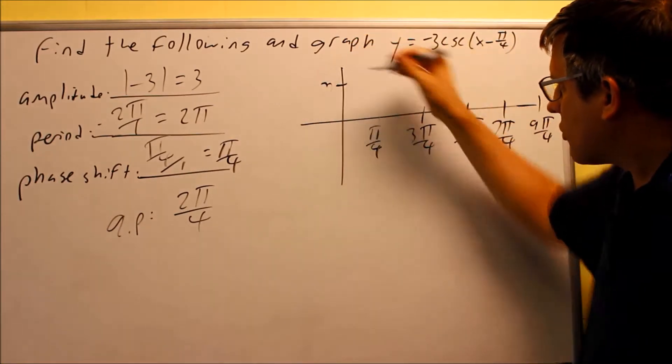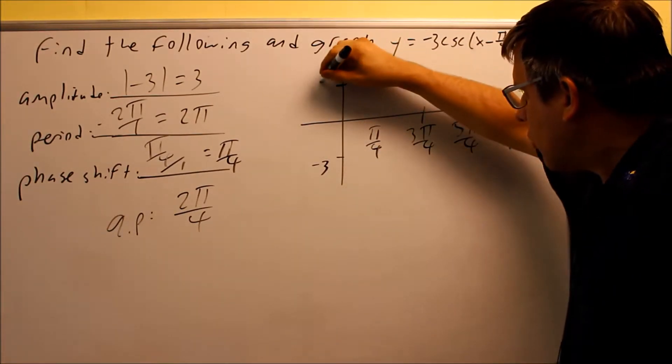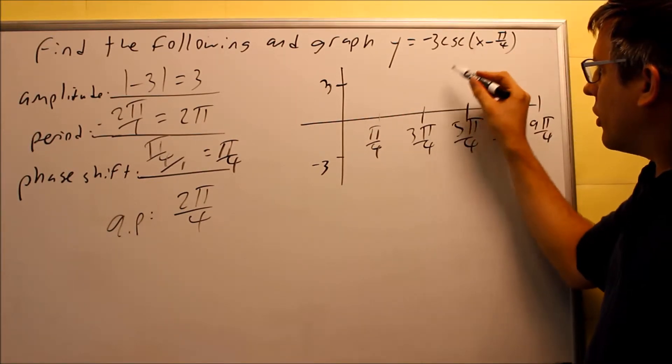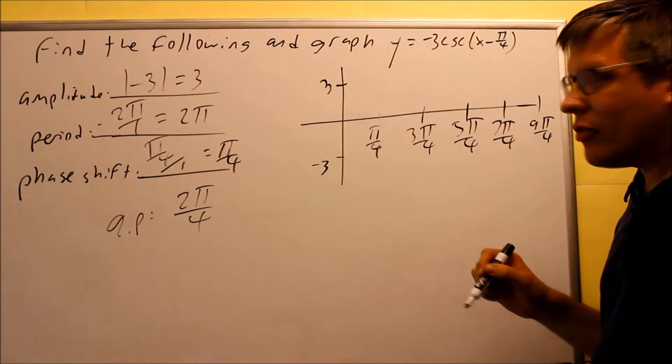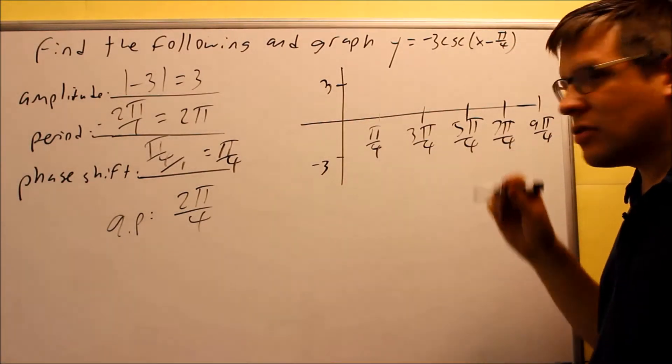This goes up to 3, so I'll mark this 3 and negative 3 there. So we have, this is our amplitude. When we start this, we're going to actually draw a sine graph because, again, cosecant and sine are related to each other. I want to do the sine to set this one up.